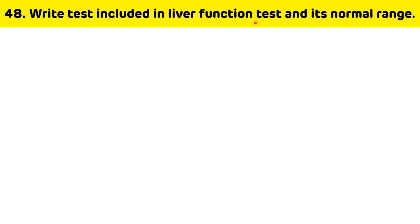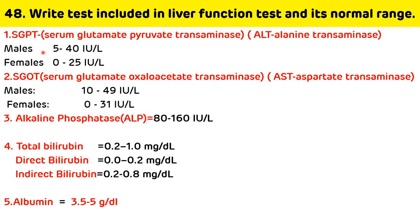Write the tests included in liver function tests and their normal ranges. Tests included are: SGPT (ALT), SGOT (AST), alkaline phosphatase, bilirubin, and albumin. Normal range of SGPT: 5–40 IU/L in males, 0–25 IU/L in females. SGOT: 10–49 IU/L in males, 0–31 IU/L in females. ALP: 80–160 IU/L. Total bilirubin: 0.2–1.0 mg/dL, direct: 0–0.2 mg/dL, indirect: 0.2–0.8 mg/dL. Albumin: 3.5–5 g/dL.